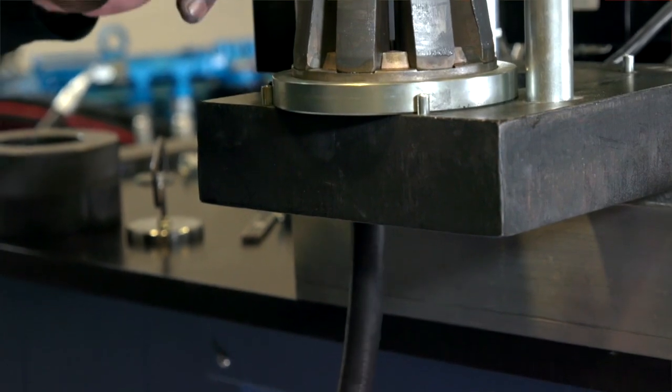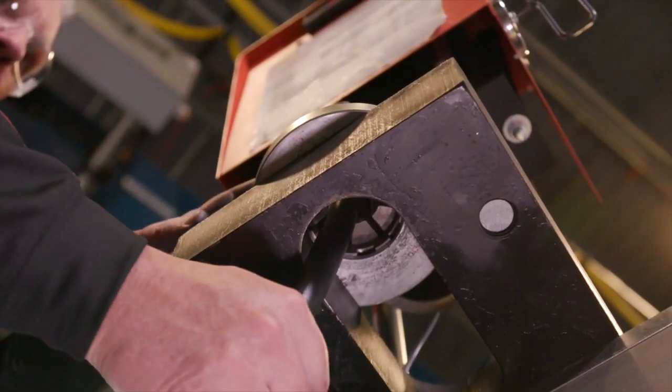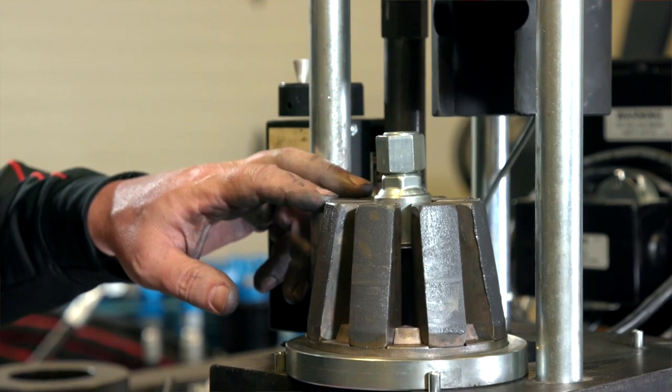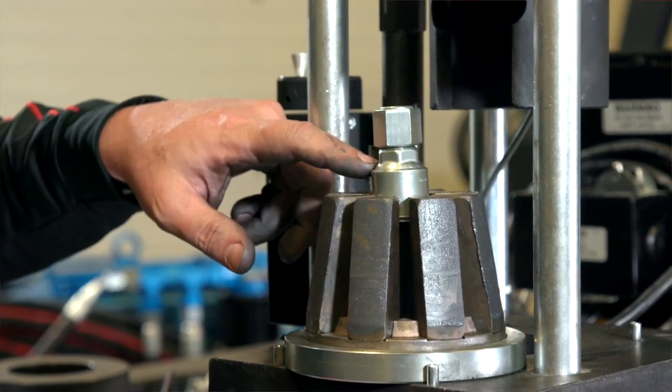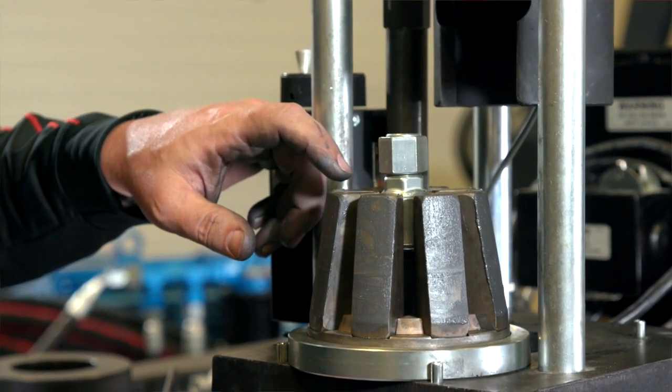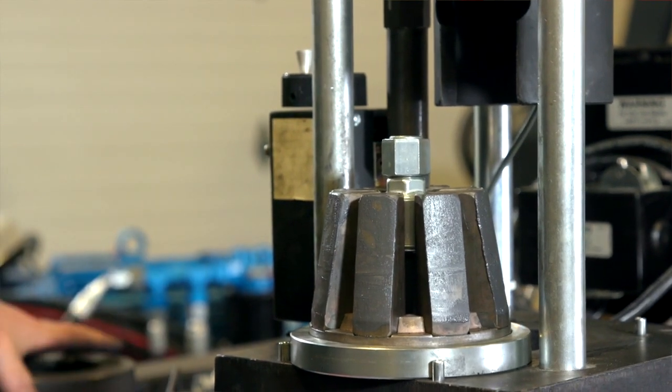Insert the hose assembly through the bottom of the crimper baseplate up through the die fingers. Place the top edge of the two-piece ferrule or the shoulder of the MegaCrimp coupling approximately one-eighth of an inch below the top of the die fingers.